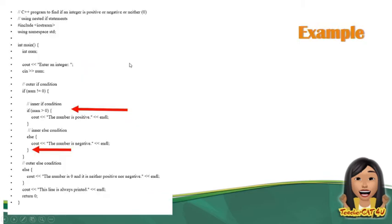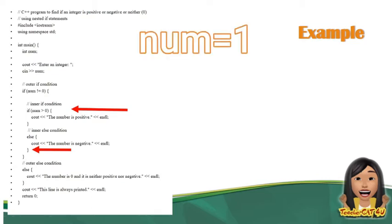Ito yung sample program ng nested if. Nag-declare muna siya ng variable na num na ang data type ay integer. Then, sabi niya dito, enter an integer. I-store ngayon yun sa variable na num. For example, ang value ng num natin is equivalent to 1. Is 1, sabi niya dito, not equal to 0. 1 is not equal to 0, ibig sabihin gagawin niya yung block of code ni if. Pupunta na siya dito, makakamit ulit siya ng panibagong if. Kaya siya naging sample ng nested if. Kasi sa loob ng if, may if. Ngayon, tatanungin dito, yung 1 ba is greater than 0? Pag nag-true yan, sasabihin niyang positive.